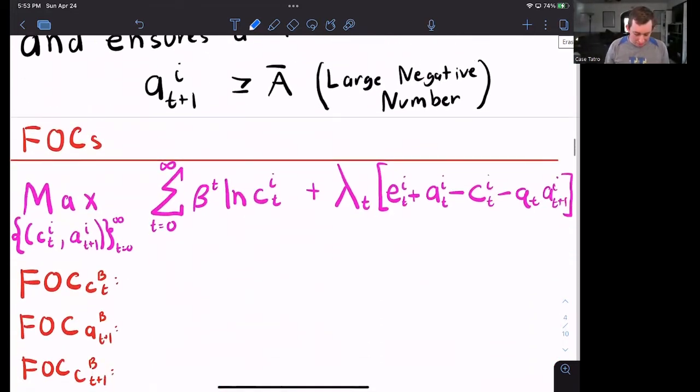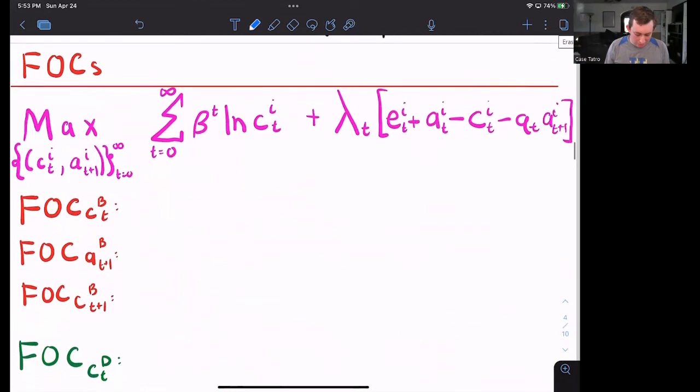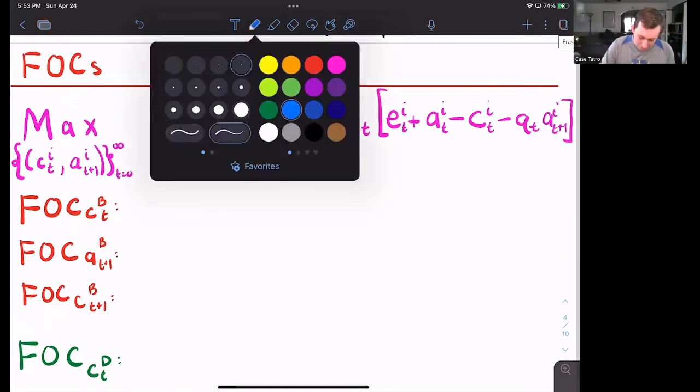Now let's go ahead and take our first order conditions and get rolling here. We know that we are going to take six representative first order conditions. So for Bill, we've got his consumption today, the number of assets he wants tomorrow and his consumption tomorrow and the same for Dave. Let's go ahead and start out with Bill's consumption today.